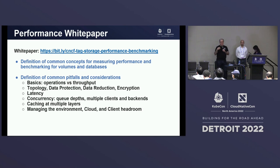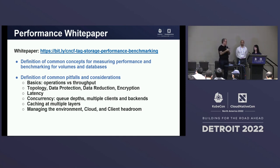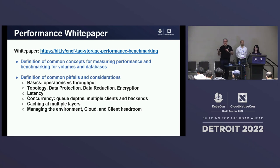Typically you have compromises to make — between consistency versus performance, or availability versus scale. We concluded that one of the most common requests from end users was how to focus deeper into some of those attributes. We focused on performance and produced a performance white paper, and on availability with our disaster recovery white paper. For the performance white paper, we looked at the different ways to reliably compare and benchmark applications within your Kubernetes environment.